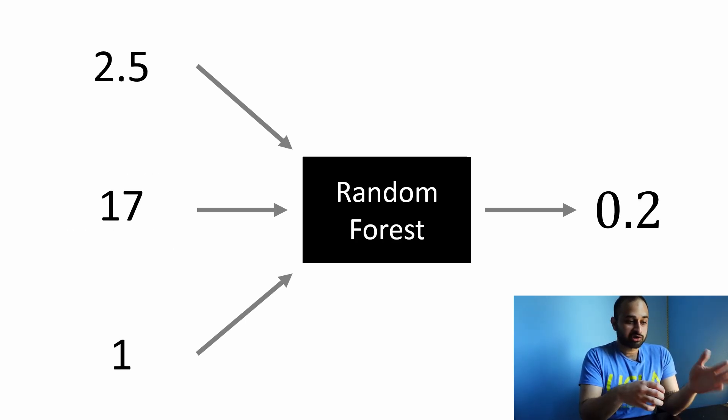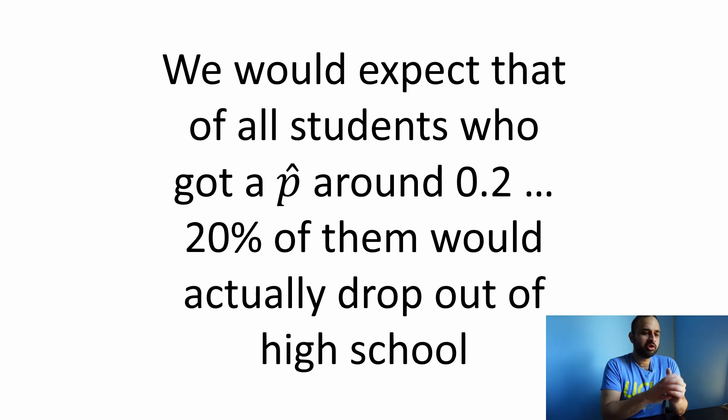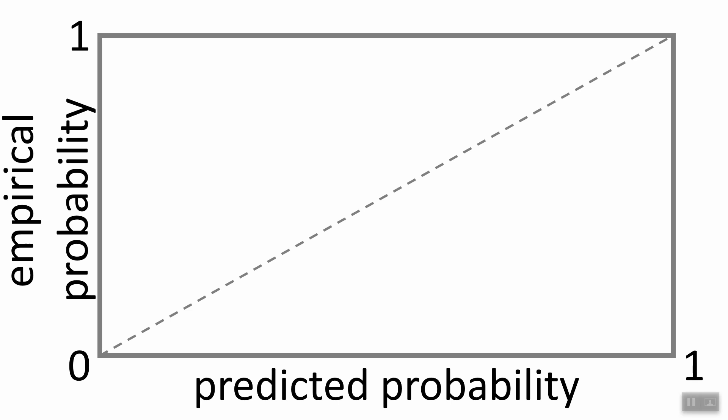To put some concrete numbers, say we put in these features on the left and on the right we get the output of 0.2 as our predicted probability. Now how do we interpret this predicted probability? It's a probability so we would expect that of all the students who got a predicted probability of around 0.2, about 20% of them should actually go on to drop out of high school. That's what a predicted probability means. If a predicted probability is like 80%, then we'd expect that 80% of all students who got that predicted probability would go on to drop out.